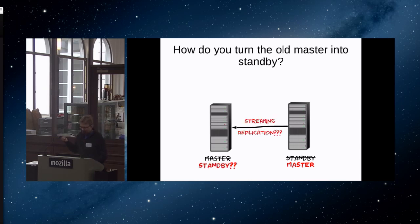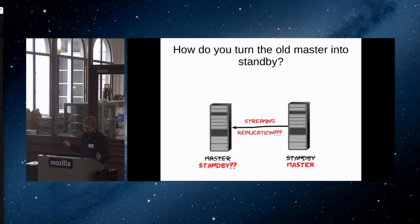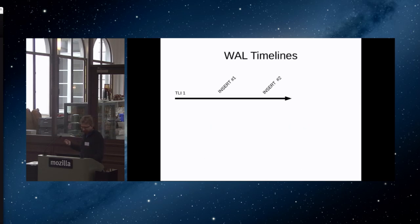The problem PG Rewind is designed to solve is: if you have already failed over to the standby server — so the old standby is now the master — what you want to do when you find out the master didn't actually die is to set up stream replication in the other direction, and turn the old master into the new standby. The question is, how do you do this?